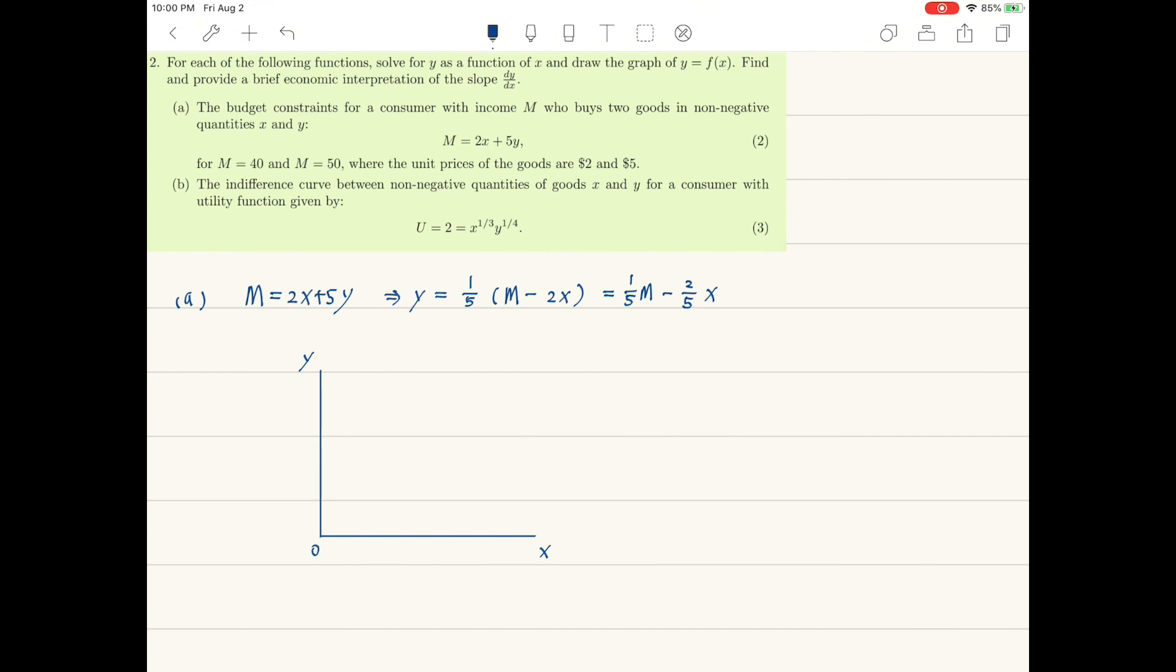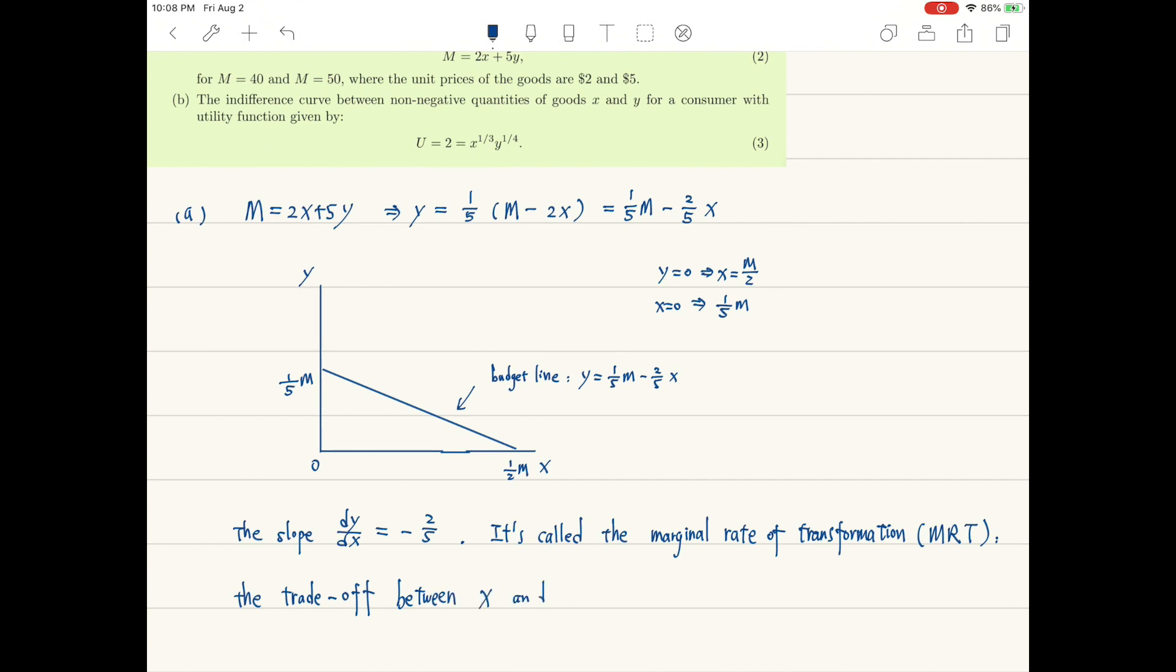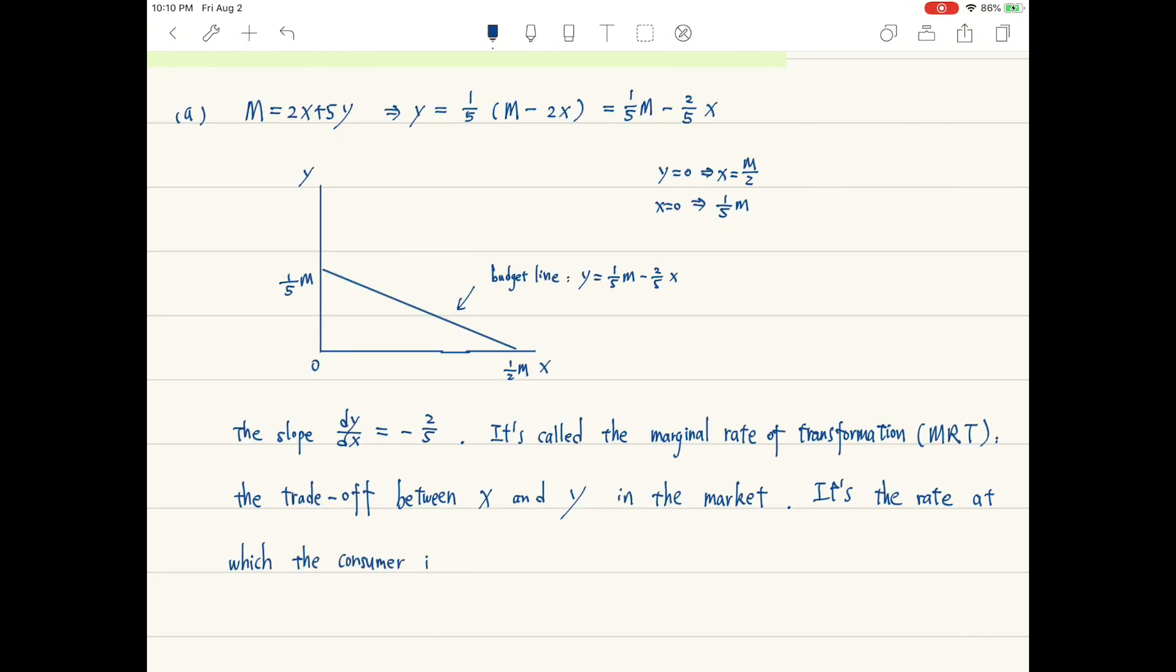The slope of the budget constraint here is equal to minus 2/5. It's called the relative price of x in terms of y. That is to say, the relative price of one unit of x is 2/5 units of y. In some textbooks, it's also called the marginal rate of transformation between x and y. It is the trade-off between x and y in the marketplace.